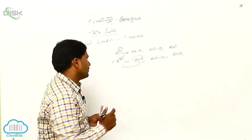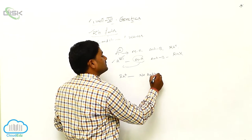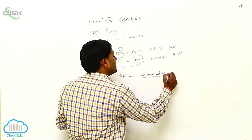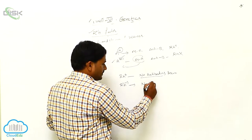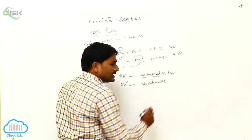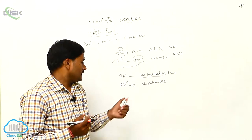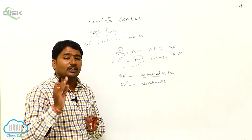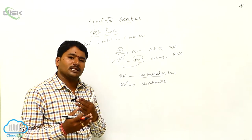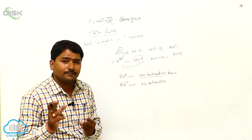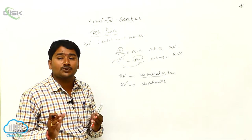Whether you are RH positive or RH negative, no RH antibodies are present in the serum naturally. RH antibodies are naturally absent in the serum for all individuals — both positive blood group people and negative blood group people. No individual naturally has RH antibodies.